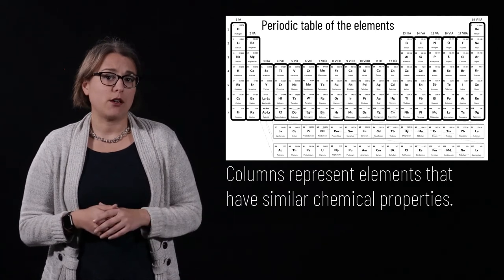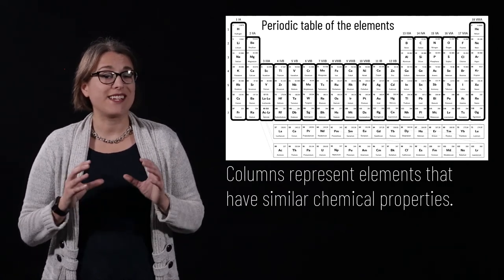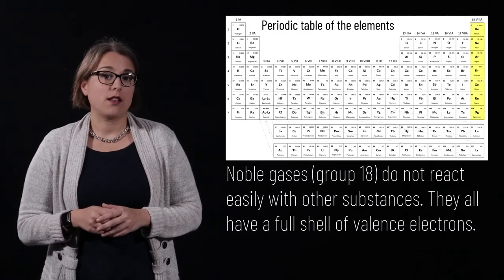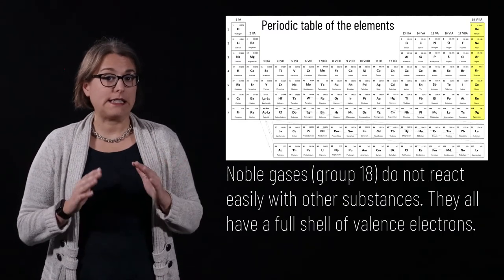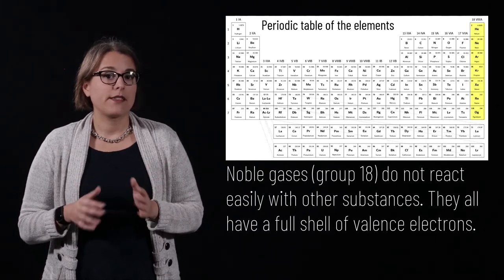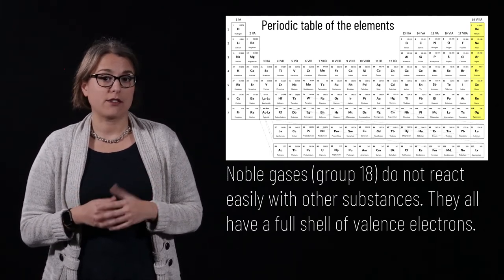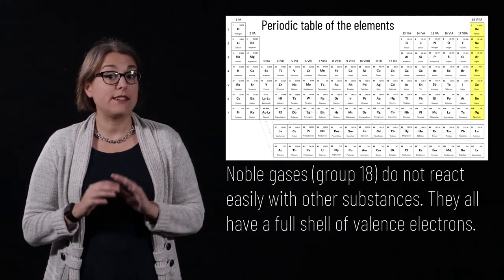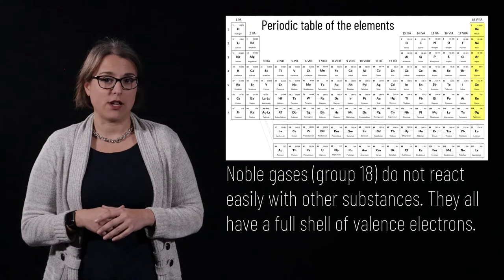The columns on the periodic table represent elements that have similar chemical properties. Today we know that the columns correspond to the configuration of electrons in each element. For example, the column all the way to the right consists of noble gases. These gases do not readily react with other substances, and today we know this is because each of these elements contains a full shell of valence electrons.